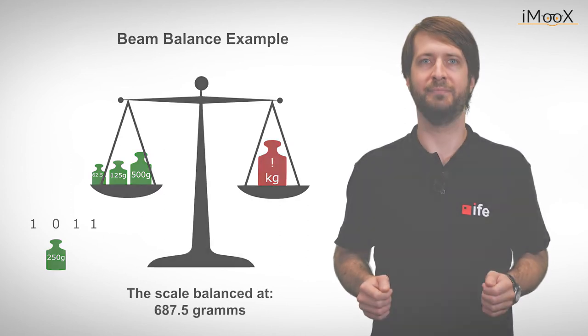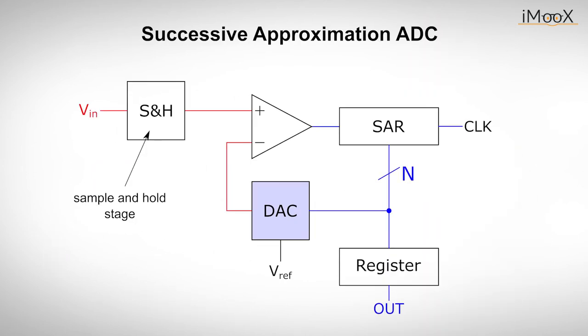Let's take a look on how it's done. The converter consists of a comparator, an n-bit digital to analog converter with reference voltage, and a logic circuit also called SAR for successive approximation register. Since the input signal must not change during the entire conversion process, such a converter must be operated with an analog memory circuit, a so-called sample and hold stage. This ensures that the instantaneous value of the input voltage at the beginning of the conversion is available until the end.